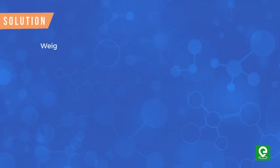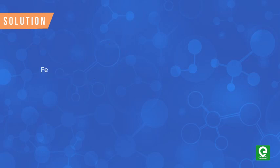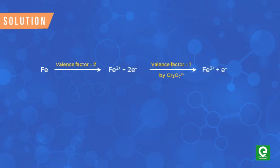In this question, we are given the weight of the ore as 0.84 gram. Let's assume that the percentage of iron is X percent. Therefore, the weight of iron present in the ore is equal to 0.84 × X / 100. It is also given that X ml of potassium dichromate is added to convert all the ferrous ions into ferric ions.